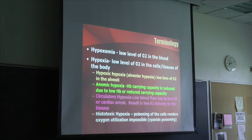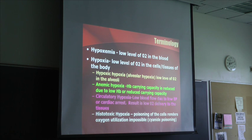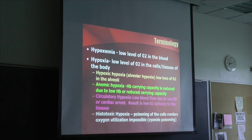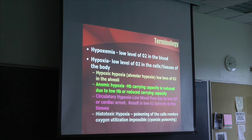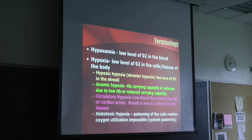The first type is hypoxic hypoxia — this is alveolar hypoxia, meaning there's a low level of oxygen in the alveoli. Hypoxic hypoxia could result from standing on a mountain at 10,000 feet where the barometric pressure is lower, resulting in less oxygen to breathe. Or you're flying in an airplane and the cabin loses pressure — the oxygen is not in your alveoli to get into your blood. That would be hypoxic hypoxia.